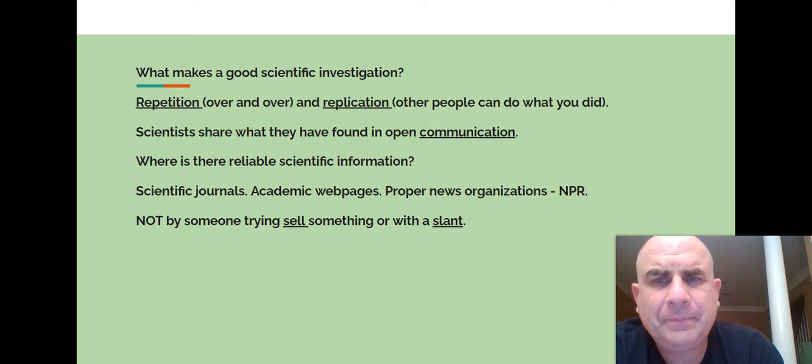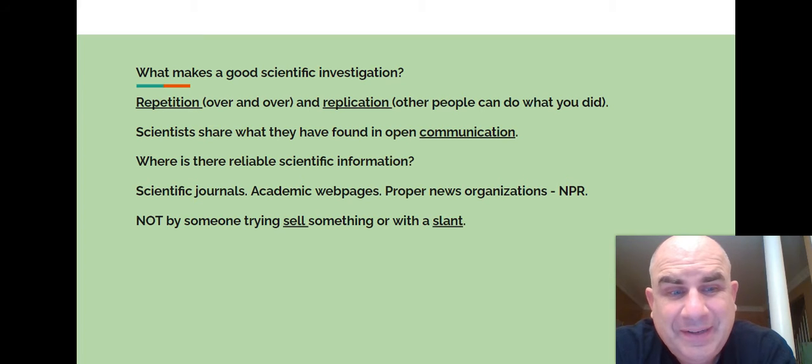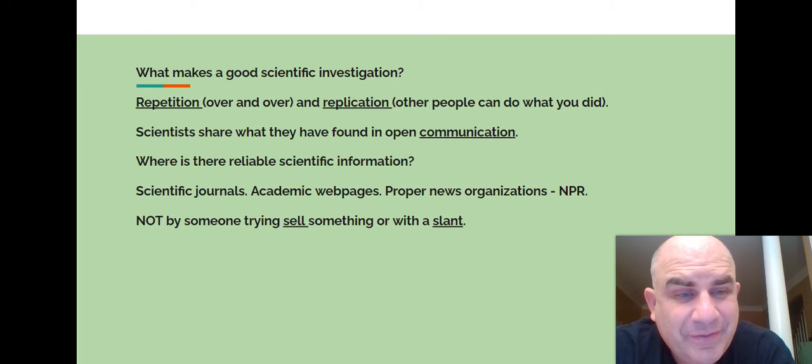So here we have another slide. What makes a good scientific investigation? Repetition. Science can be repeated. If you can't repeat science, then it's not right. So if you do something over and over, that means it's a fact. It can happen. Scientists share what they have found in open communication. Where do you find reliable scientific information? It's a big problem now. People can just start up a website and put anything they want on it and people will believe it. Scientific journals, academic webpages, proper news organizations, NPR. Just straight facts. Might not be the facts that you want, but it's facts.